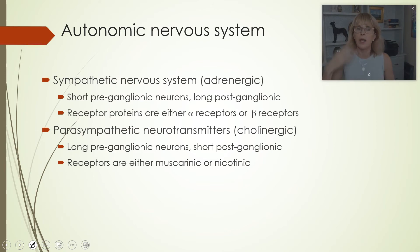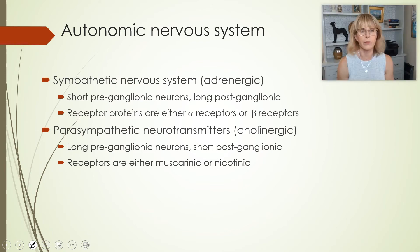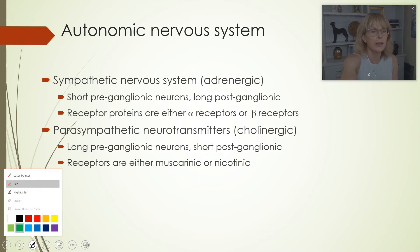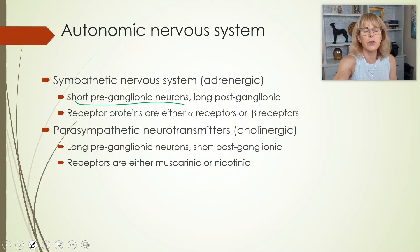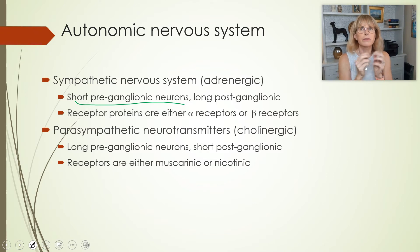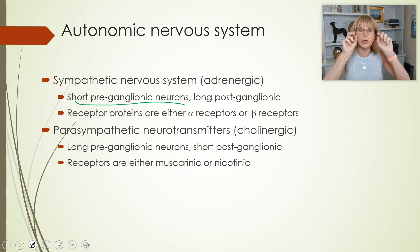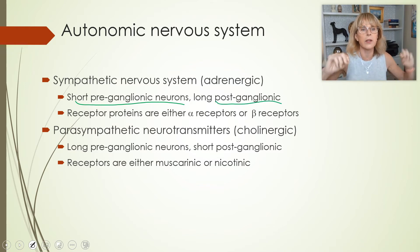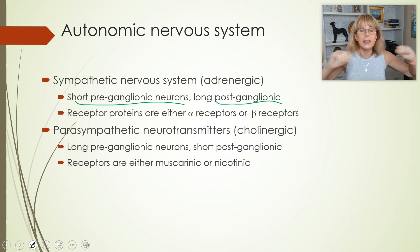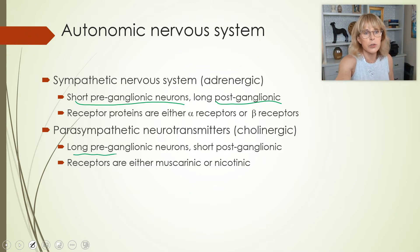To summarize: for the sympathetic nervous system, the preganglionic neuron is often short, and the ganglia sit close to the spinal cord. The postganglionic neuron — the nerve going from the ganglion to the effector cell — is rather long. The opposite is true for the parasympathetic nervous system: the preganglionic neuron is long and the postganglionic is short.